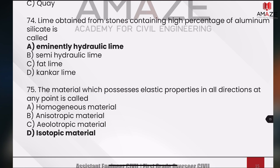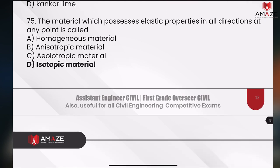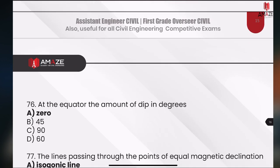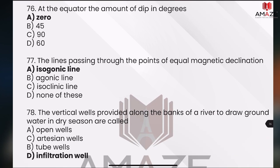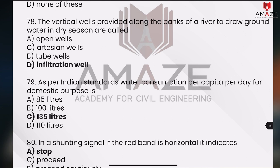What do we need? High percentage of aluminum sulfate in this case. It is a hydraulic line, isotropic material — elastic properties in all directions. This is a direct question. The amount of dip, isogonic lines — this is the theorem. Along the banks, this is actually a definition of infiltration.